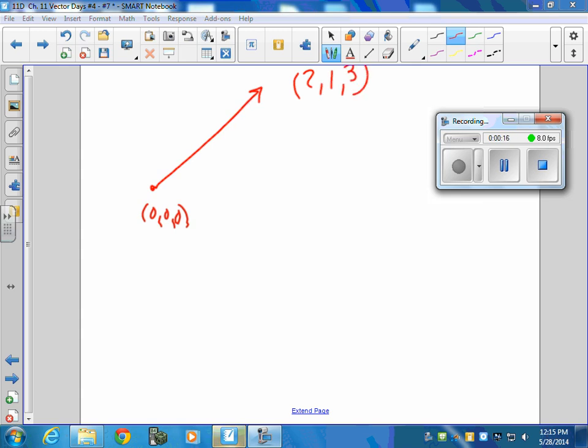Now, I want to call this vector A. What is vector A in column vector form? What is it? What do you think, Adam? It's 2 minus 0, 1 minus 0, 3 minus 0. And I want you to really hone in on this concept because this is one that makes or breaks you with vectors. Heads minus tail.